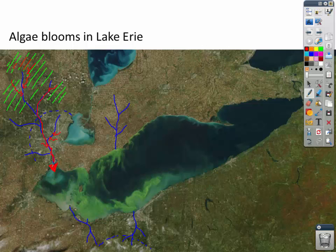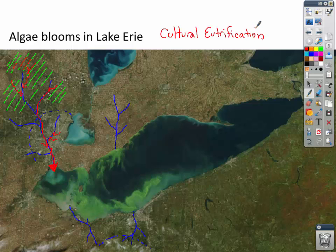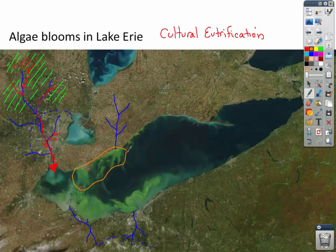The impact of that is what's called cultural eutrophication. Cultural eutrophication is a process — it's an environmental impact. And you see here these algae blooms. This green patch, these are algae blooms, as seen in this satellite image. The phosphorus and nitrogen getting into Lake Erie is causing large-scale blooms of algae.